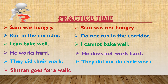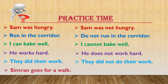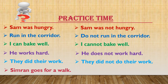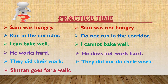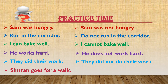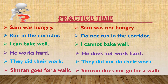'Simran goes for a walk.' This does not have a helping verb and is not an imperative sentence. The verb is 'goes,' which is in simple present tense. We now check the subject: 'Simran,' which is singular. So we have to use 'does not.' Your answer is: Simran does not go for a walk.